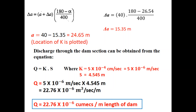Solving gives delta a = 15.35 m. Since a + delta a = 40 m, we get a = 40 − 15.35 = 24.65 m. Location K is plotted by shifting from J by a distance of delta a. Once a is known, point K is identified from F, and ultimately the phreatic line is shifted from J to K.